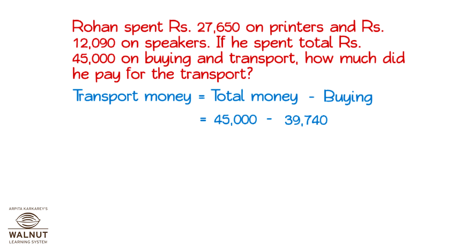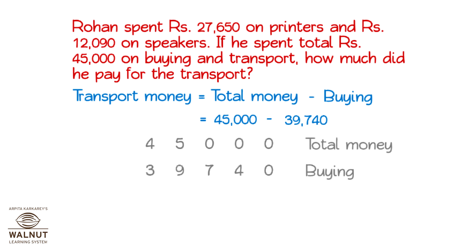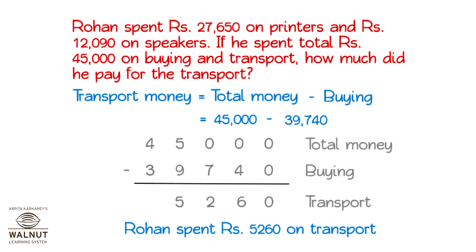Now, we have to find the money spent on transport. The money spent on transport is the total money minus the money spent on buying the things. Let's do the subtraction. Rohan spent rupees 5,260 on transport.